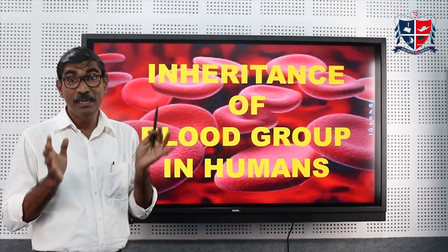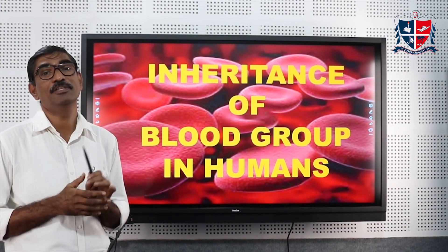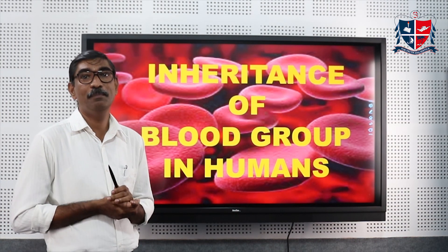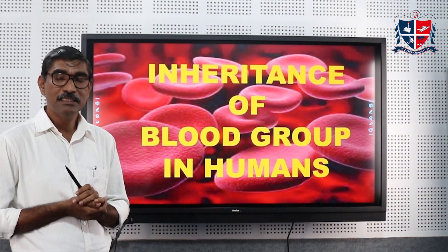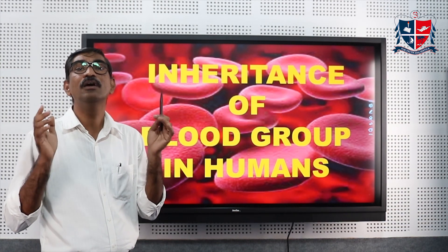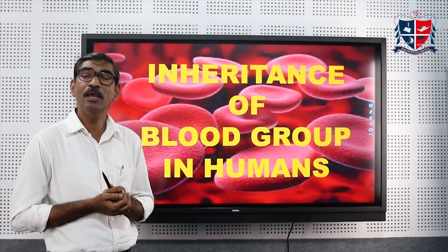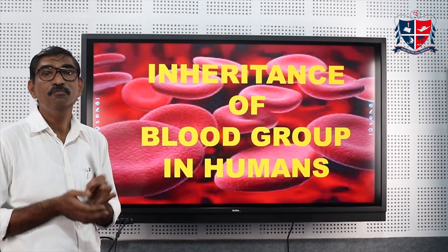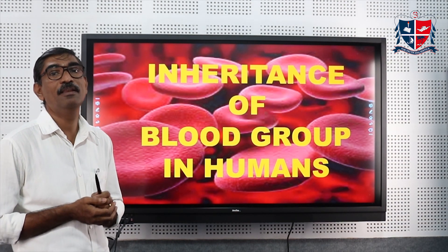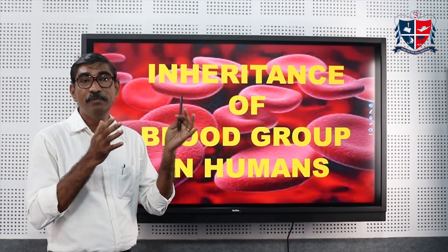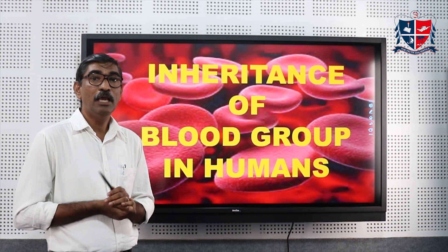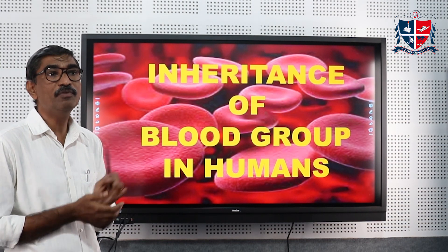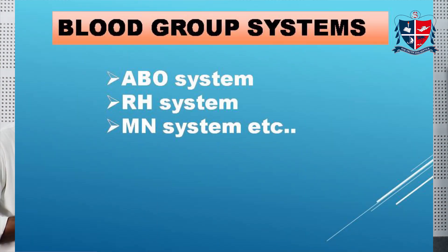This blood performs the same function in all individuals — its structure is the same, its components are the same — still there are different types of blood groups among us. In this session we will see what is the reason behind the occurrence of these various types of blood groups and how the information is transferred from parents to offspring.